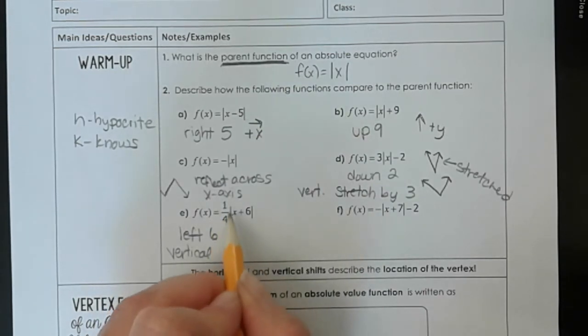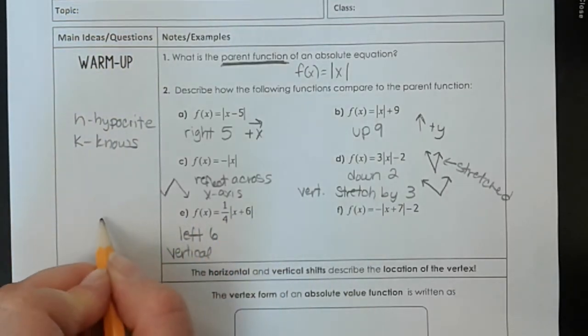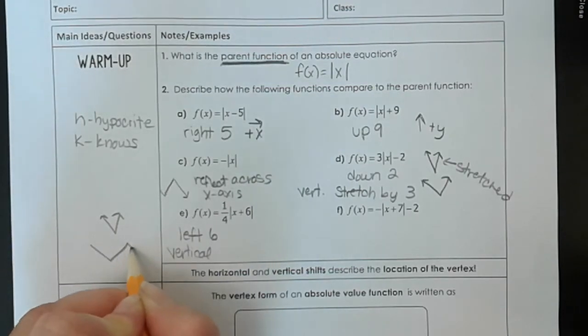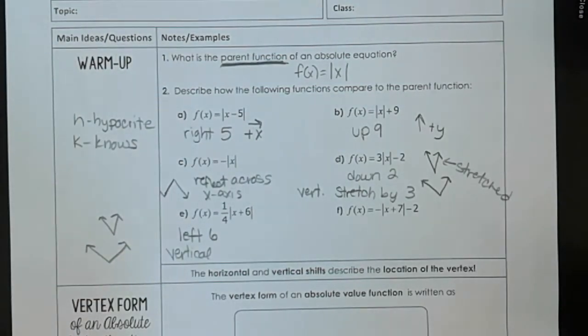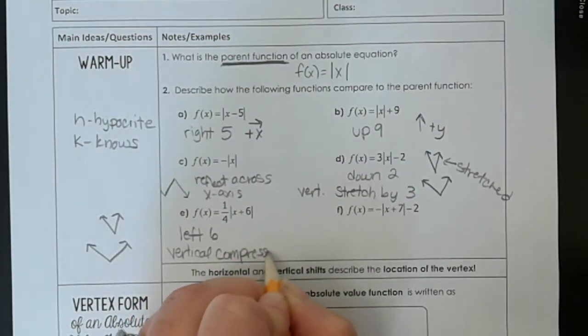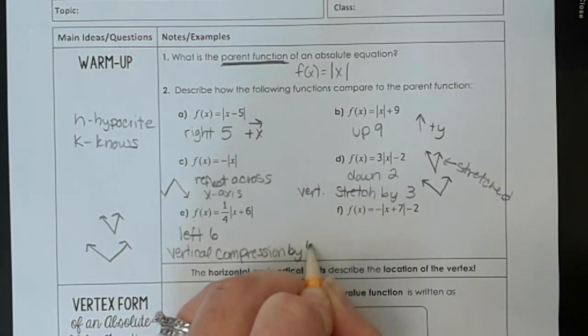Because if this a value is less than 1, meaning it's a fraction, if it's in between 0 and 1, then it makes our absolute value, instead of being really nice and normal like this, it really squishes it out so that it's nice and wide like that. So that's a vertical compression by 1 fourth.